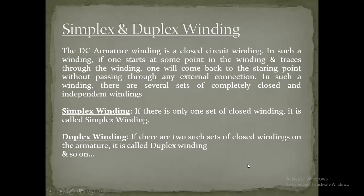DC armature winding is a closed circuit winding: if one starts at some point and traces through the winding, one will return to the starting point without passing through any external connection. There can be several sets of completely closed and independent windings. Simplex winding has only one set of closed winding. Duplex winding has two such sets of closed windings on the armature, and so on.